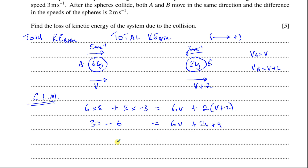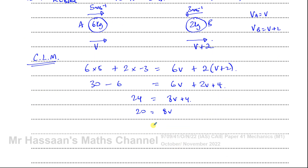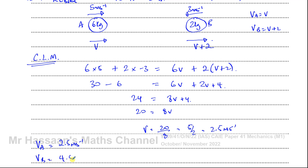So we get 24 equals 8v plus 4, which gives 20 equals 8v, so v equals 20 over 8, which simplifies to 5 over 2, or 2.5 meters per second. Therefore the final velocity of A is 2.5 meters per second, and the final velocity of B is 4.5 meters per second, since B's velocity is v plus two.